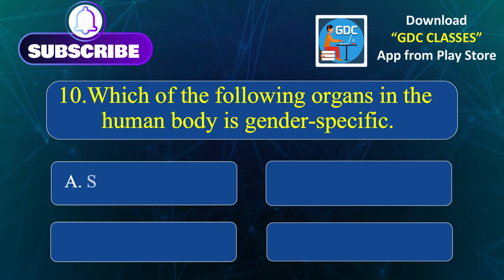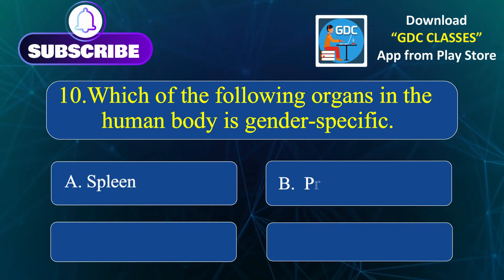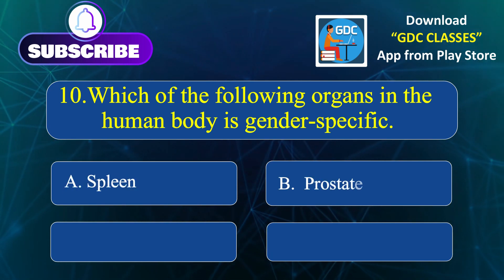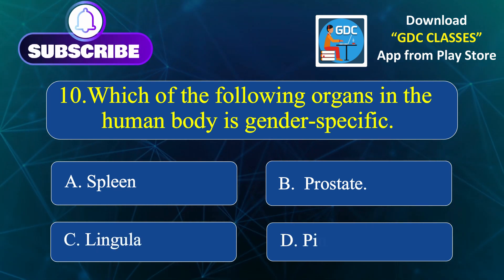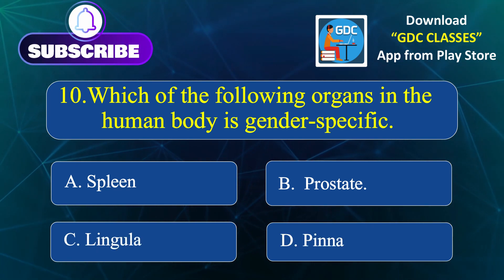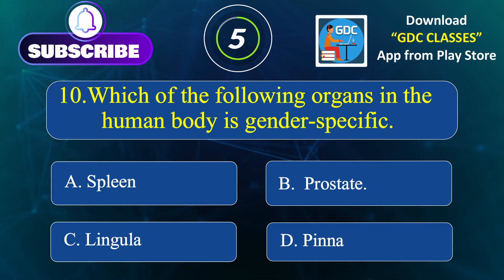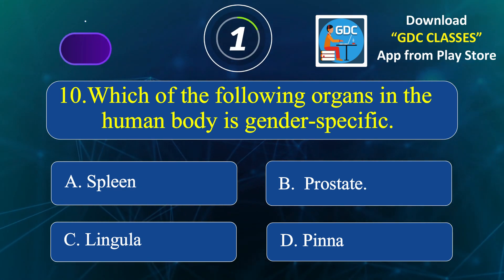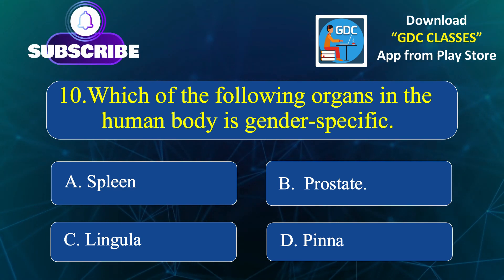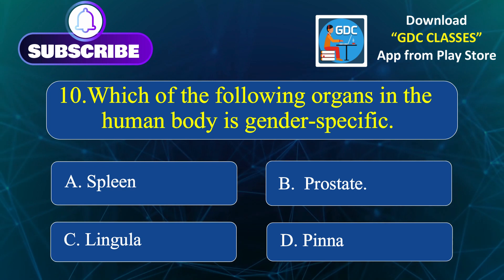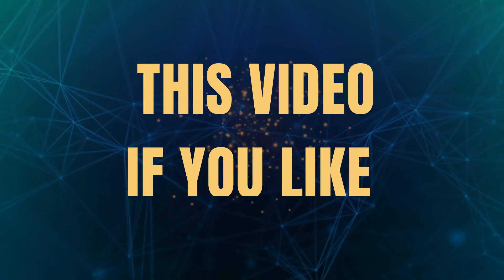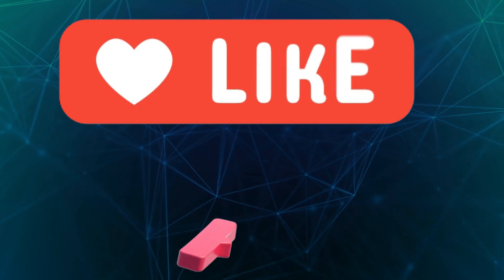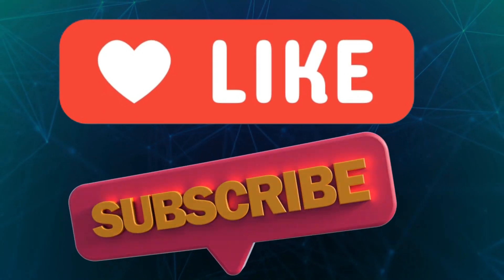Which of the following organs in the human body is gender specific? Option A. Spleen, Option B. Prostate, Option C. Lingula, Option D. Pinna. Correct answer is Option B: Prostate. If you like this video, then like the video and subscribe the channel.